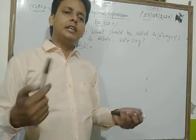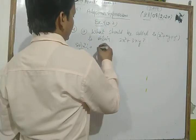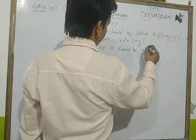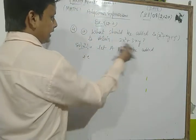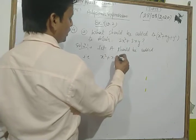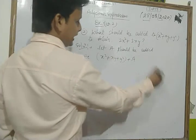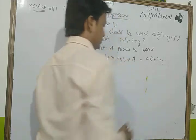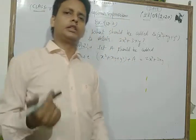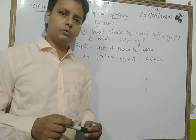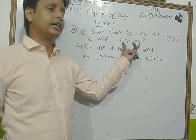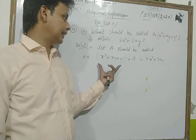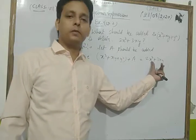In this type of question, let A be the expression that should be added. So we write: x² plus xy plus y² plus A equals 2x² plus 3xy. We need to find A. So A equals 2x² plus 3xy minus the given expression x² plus xy plus y².